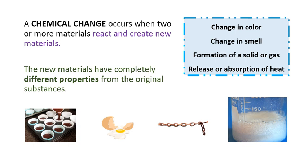The third indicator is the formation of a solid or gas. If you add vinegar to baking soda in a beaker, it will produce carbon dioxide gas when it reacts. So something new is being formed and there is a reaction occurring. When this reaction is happening, it is absorbing all the heat from its surroundings. It is an endothermic reaction, so the beaker will become cold.